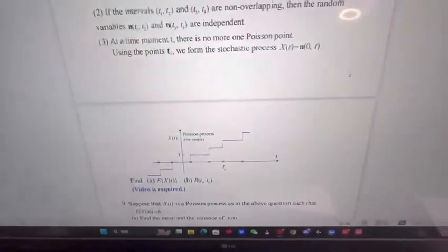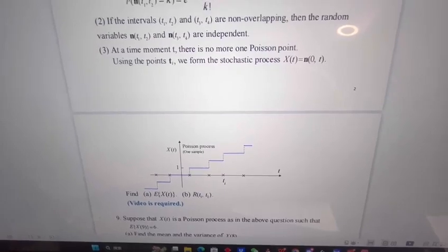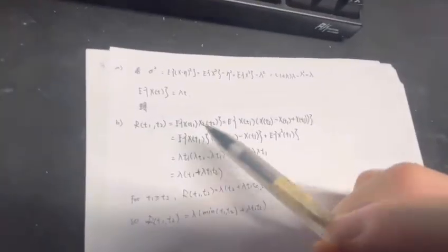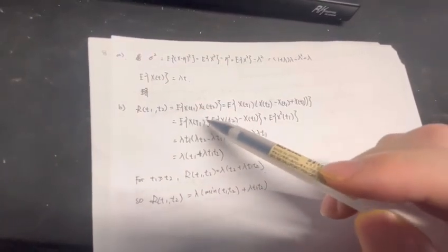For question number b, it asks us to find R(t1,t2). So R(t1,t2) equals the expected value of X(t1) times X(t2).